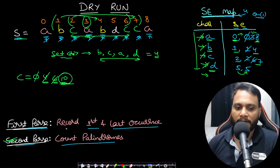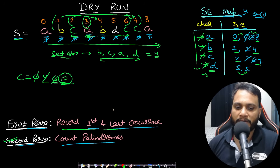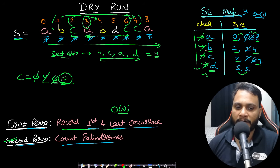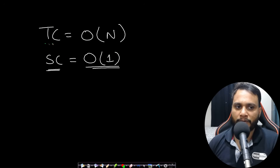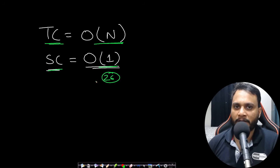The time complexity is O(n): the first pass over the string of length n is O(n), and the second pass is over at most 26 unique characters — constant time. The space complexity for the map is also O(1) effectively, since the map can have at most 26 entries regardless of string length.